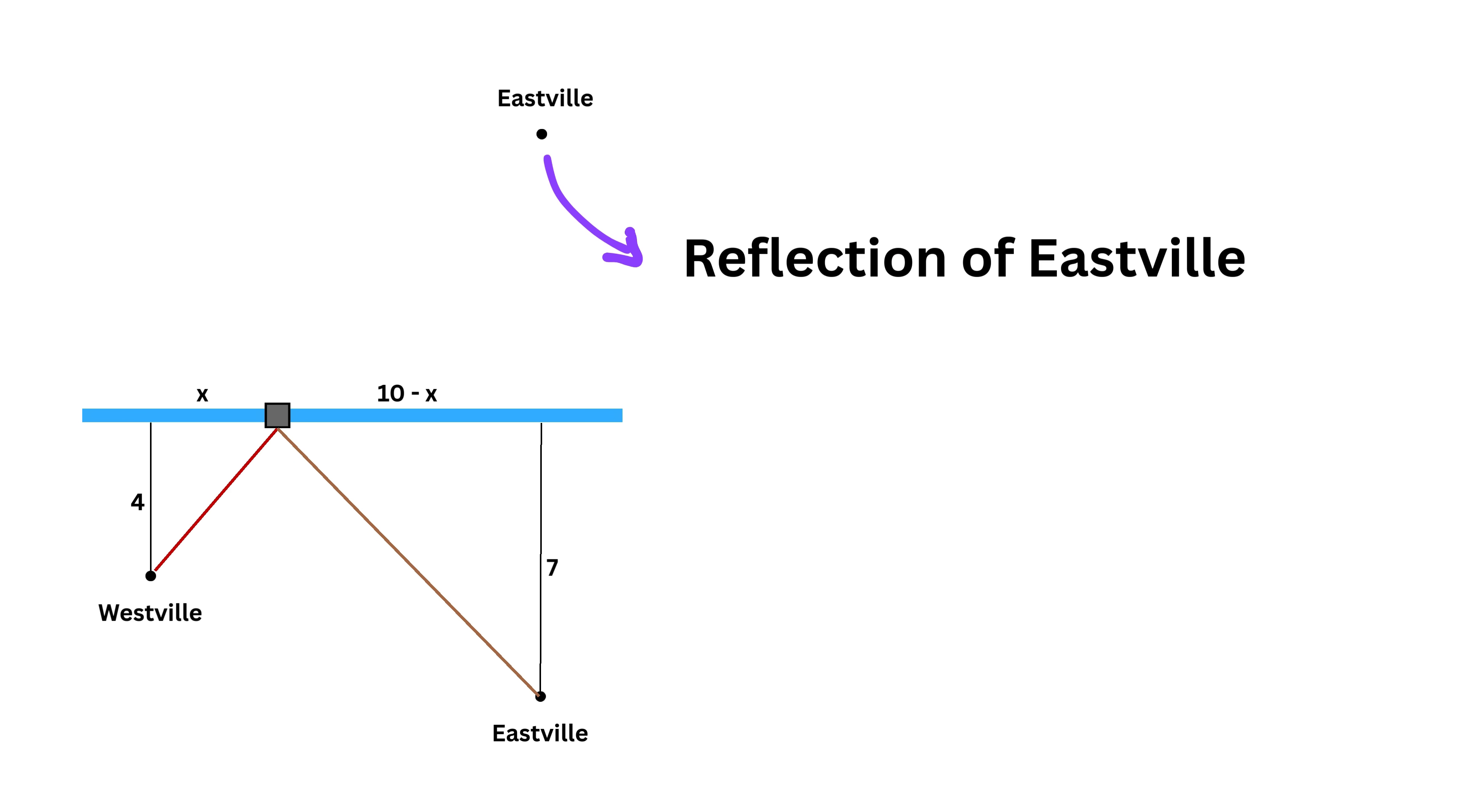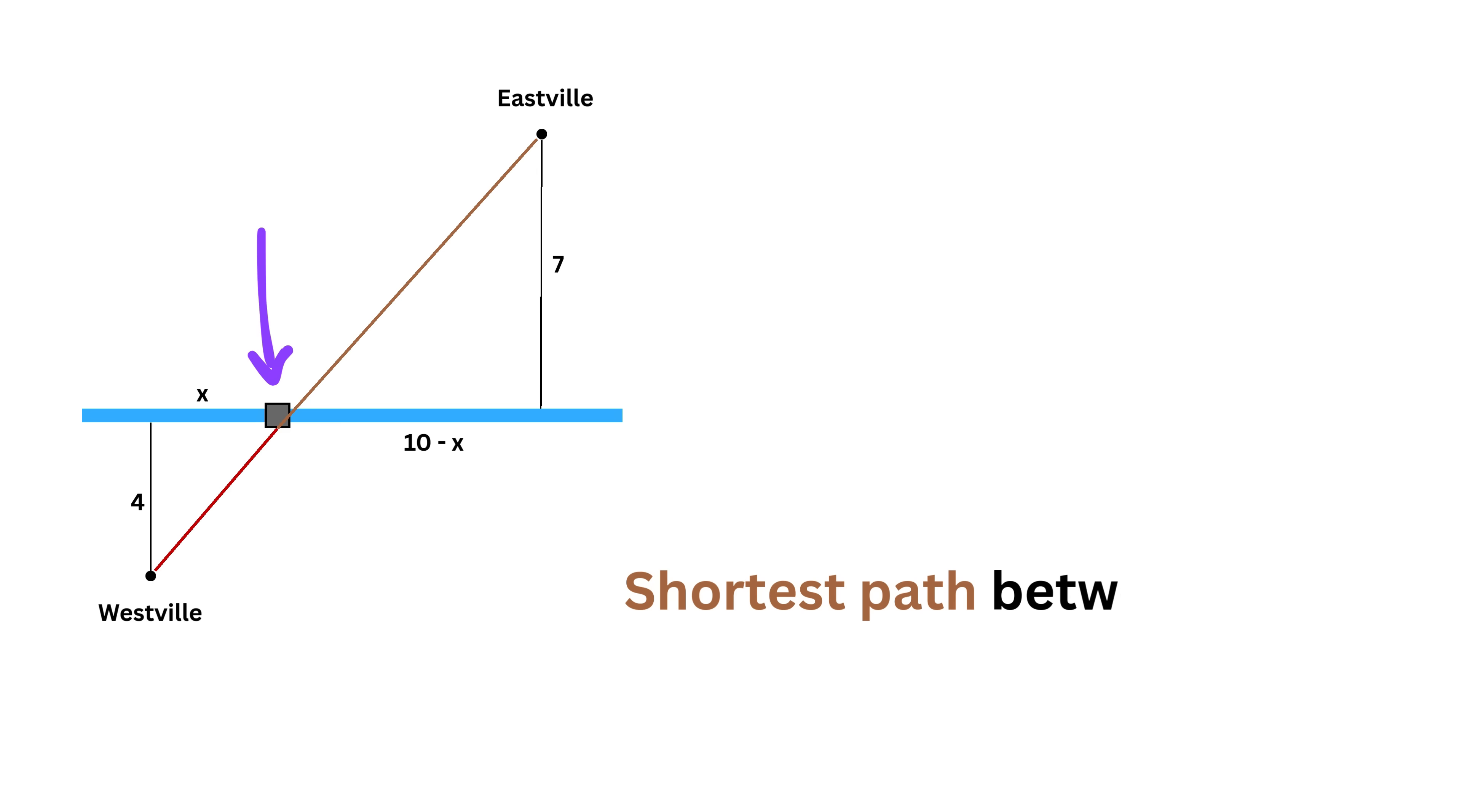Imagine reflecting Eastville across the river, so that the new reflected Eastville is now seven miles above the river. Now instead of connecting the station to each town separately, we draw a single straight line from Westville to the reflected Eastville like this. The point where this line crosses the river is where the station should be built. This is because the shortest path between two points is a straight line, and this line represents the combined shortest route to both towns using two straight pipe segments.